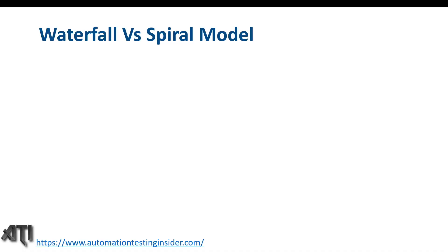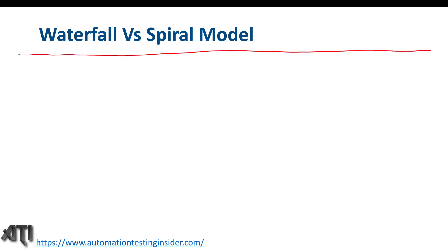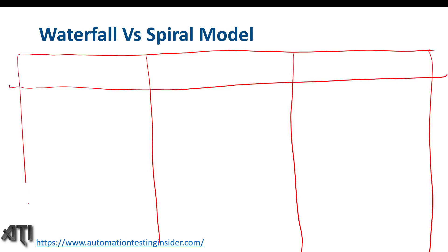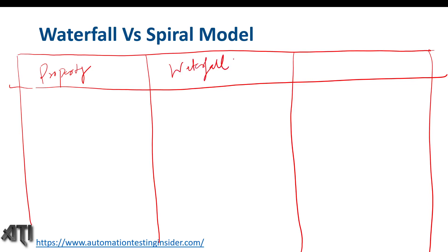Let's do a comparison between the waterfall model and spiral model and see some differences. I'll create three columns: the first is 'Properties' — the basis on which we'll do the comparison — the second is 'Waterfall Model,' and the third is 'Spiral Model.' Let's see the first point.